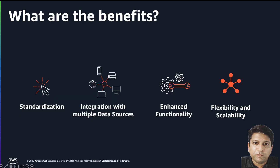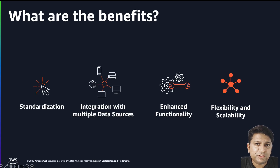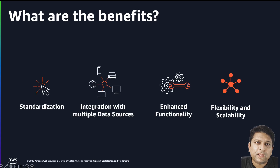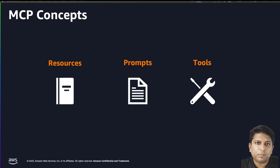Let me walk you through the key benefits of this pattern. First, you get a standardized way to set up connections between your AI systems and OpenSearch domains. Second, it's really simple to manage multiple data sources — you just need a few lines in your configuration file. Third, your AI systems can take full advantage of OpenSearch's efficient search capabilities and access control without rebuilding any sorting or scoring techniques from scratch. Finally, since you can host the MCP server on scalable AWS services like Amazon ECS or Lambda, the system can scale automatically.